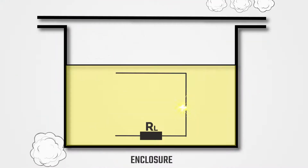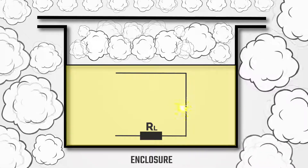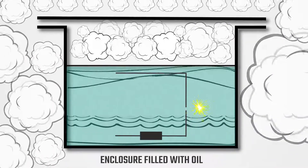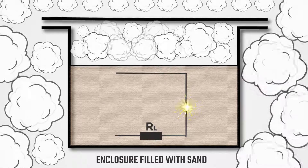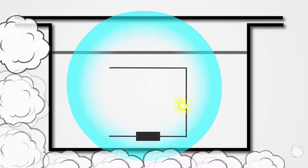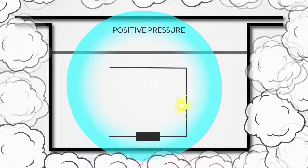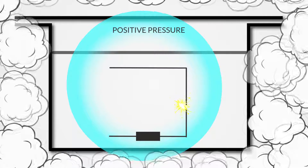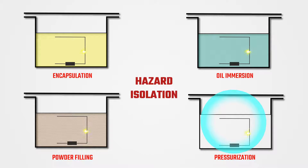The second approach involves isolating the source of ignition from the explosive atmosphere. The source of ignition — heated surfaces or sparks — is isolated from an explosive atmosphere by encapsulating the device in a resin or immersing it in oil. Or the device can be filled with sand, glass, or quartz particles that keep an ignitable mixture from forming inside. Or the enclosure can be purged and replaced by clean air or an inert protective gas, then pressurized so that the pressure inside is higher than the surrounding atmosphere, keeping an explosive atmosphere from entering. This approach is referred to as hazard isolation, and the protection techniques are encapsulation, oil immersion, powder filling, and purging and pressurization.